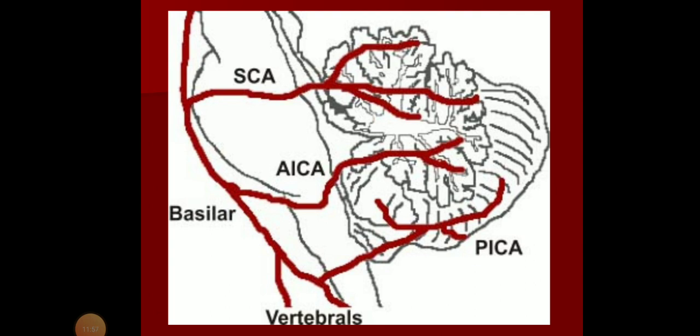Looking at the figure, you can see the basilar artery formed by the joining of two vertebral arteries. From the vertebral artery, only one branch supplies the cerebellum — PICA. The other two, superior cerebellar and anterior inferior cerebellar, come from the basilar artery. The superior cerebellar artery supplies the superior surface. The inferior surface is supplied by the anterior inferior and posterior inferior cerebellar arteries, supplying the anterior and posterior parts respectively.